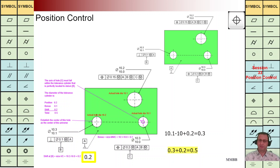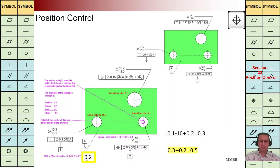For this small hole on the left hand side, let's consider: the real diameter of the hole is 10.2. What should be the value of the tolerance zone (tz) for that? The difference between 10.2 and 10.1 is 0.1, and we are going to have 0.1 as a tz bonus. The total shifting we can say is 0.2.